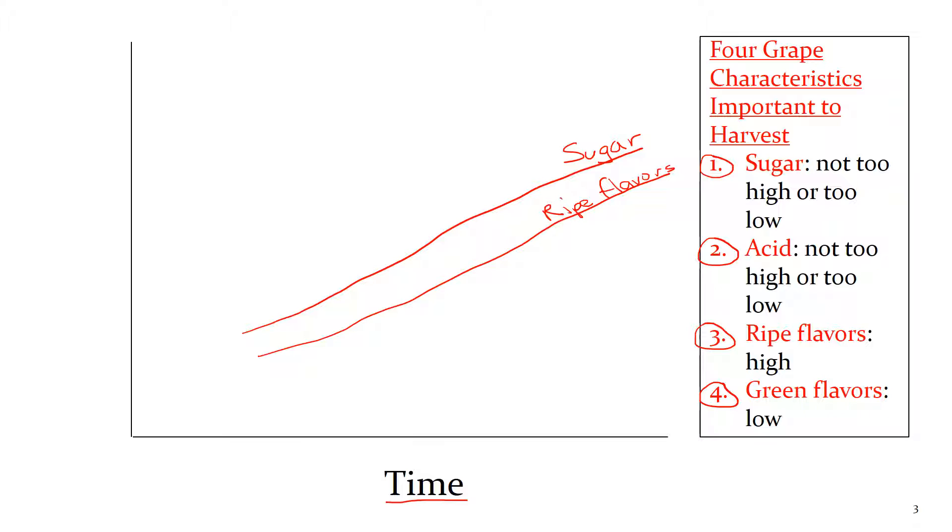In a perfect growing season, sugar and ripe flavors are going to increase at about the same rate. I'm showing the two lines here increasing at about the same rate. That's ideal. Sometimes sugar will outpace ripe flavors. You'll end up with a higher alcohol wine in that case because you'll probably pick later. You'll wait for the ripe flavors to get to be where you want them. And if the sugar is outpacing the ripe flavors, the sugar level may be very high at harvest.